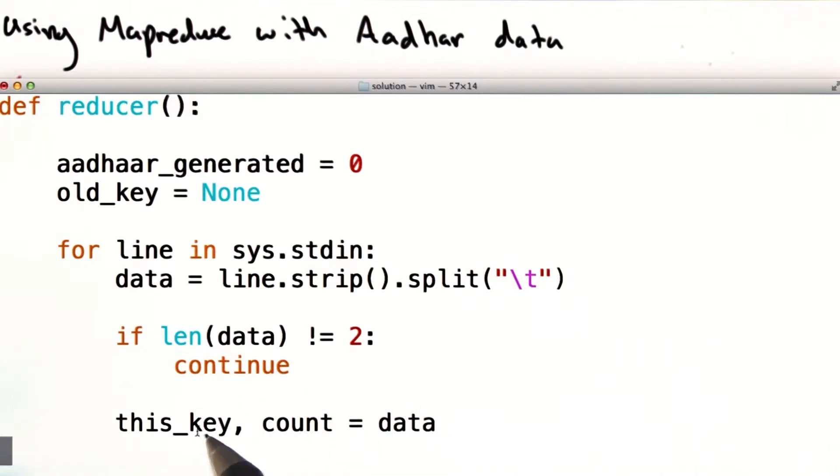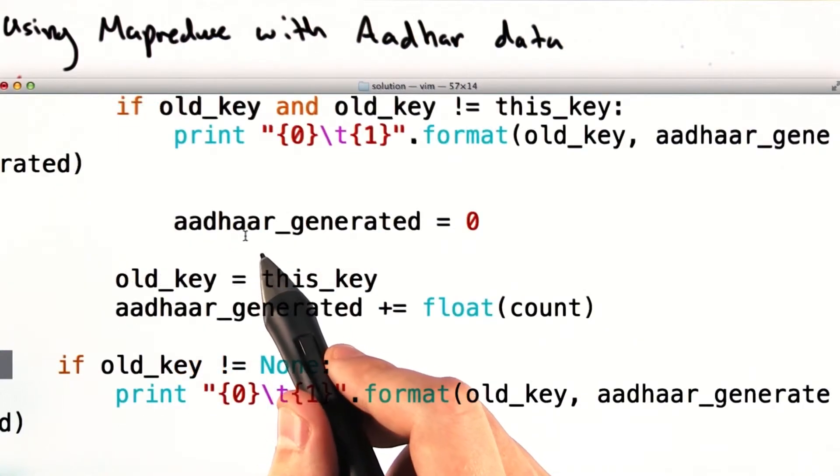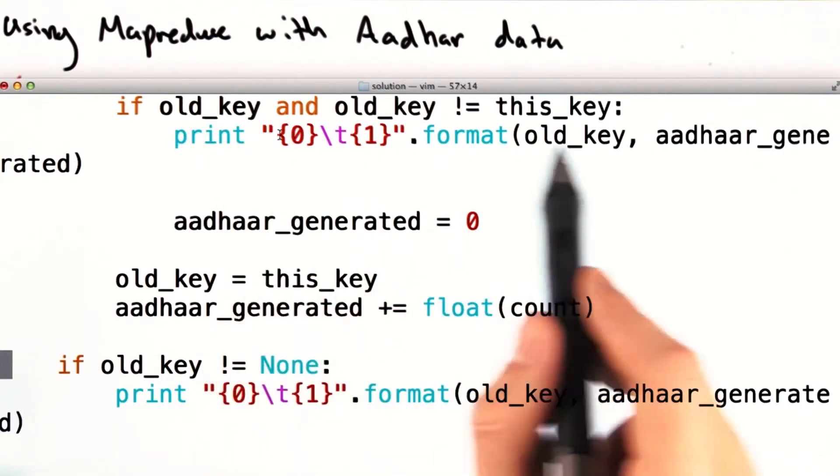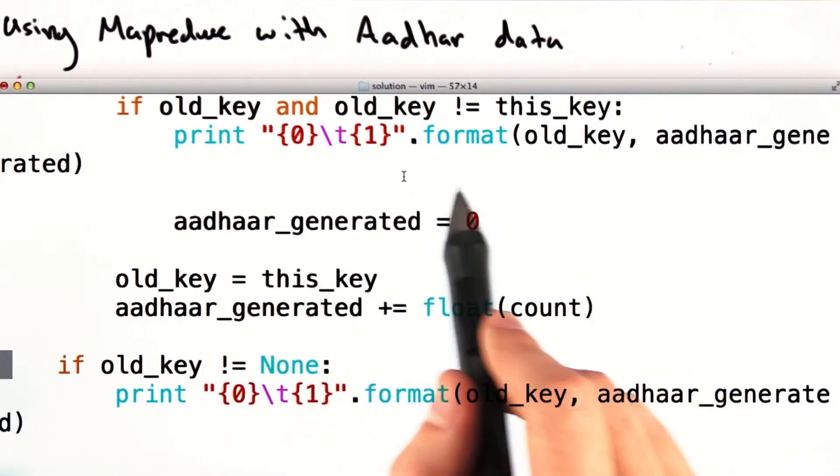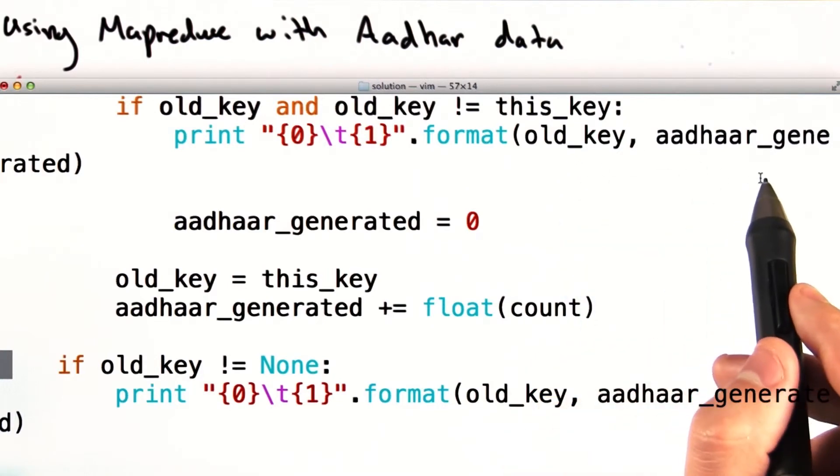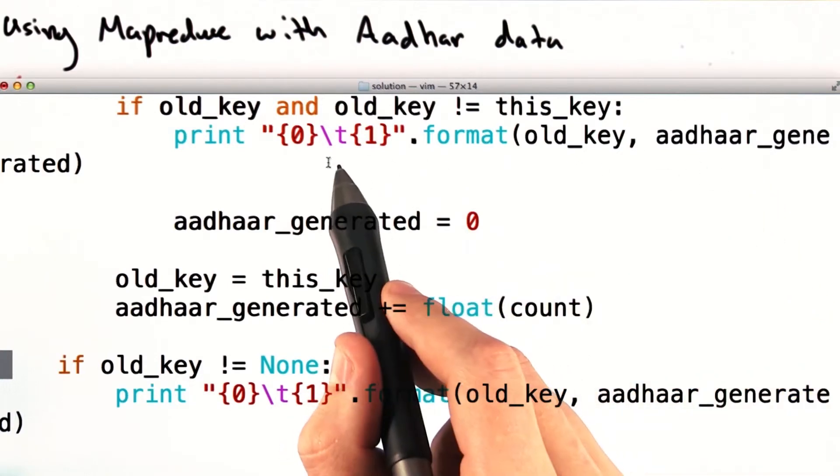Next, we set this key and count equal to the key and number of Aadhaar generated in data. Recall that reducer receives the key value pairs sorted by key. So if this is a new key, let's submit the final key value pair, the key and the total number of Aadhaar generated, separated by a tab.